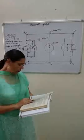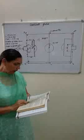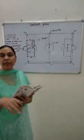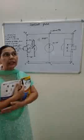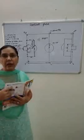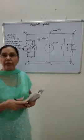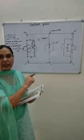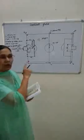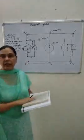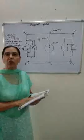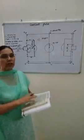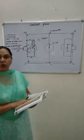In extra time, the golden goal rule was applied. When 30 minutes are given for the extra period, if any team scores a goal first, that team is declared the winner, and the remaining time is not played. This rule was called the golden goal.